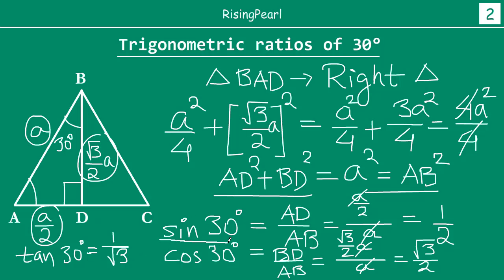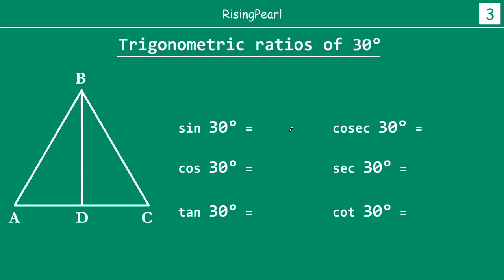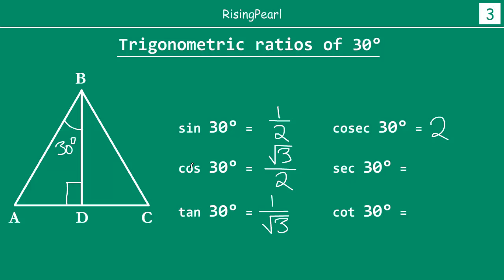For the reciprocal ratios: cosec 30 is the reciprocal of sine 30, so cosec 30 equals 2. Sec 30 is the reciprocal of cos 30, so sec 30 equals 2 over √3. Cot 30 is the reciprocal of tan 30, so cot 30 equals √3. To summarize: sine 30 = 1/2, cos 30 = √3/2, tan 30 = 1/√3, cosec 30 = 2, sec 30 = 2/√3, cot 30 = √3.